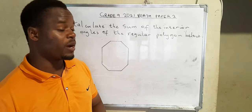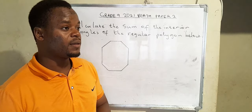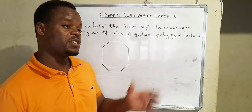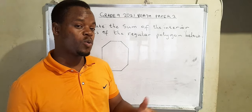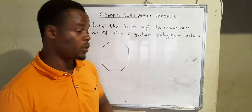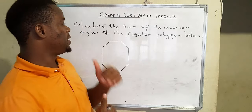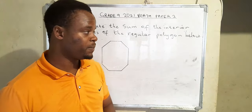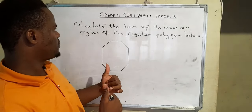I'm going to show you how you can actually work it out. This question was derived from the topic angles and polygons. The question reads: calculate the sum of the interior angles of the regular polygon below.